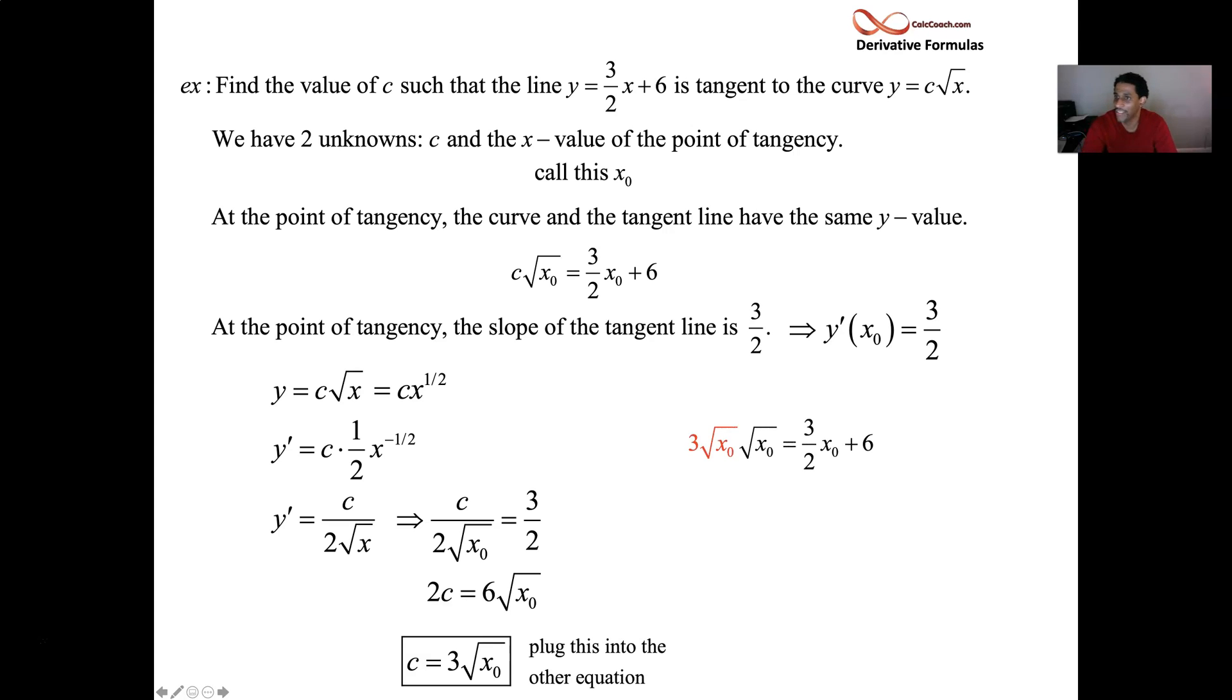Divide by 2: c = 3√x₀, and we can take that into the other equation and figure out what x₀ is. √x₀ and √x₀—that's convenient—that would just be x₀. So 3√x₀ · √x₀ + 6 = 3x₀ + 6 = (3/2)x₀ + 6. Subtract the (3/2)x₀ over, so 3 - 3/2 is 3/2. Then multiply by the reciprocal, multiply by 2/3, and we'll have that x₀ = 4. That worked out well.